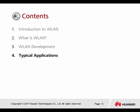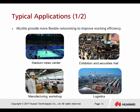WLAN provides more flexible networking to improve working efficiency. For example, in a stadium news center, they rely on wireless for live broadcasting, which is more flexible for cameras and recording. Exhibition halls and security areas can do monitoring and provide free Wi-Fi access for guests. Manufacturing workshops use wireless for monitoring and remote control. For logistics, wireless supports long-distance communication and wireless remote control.